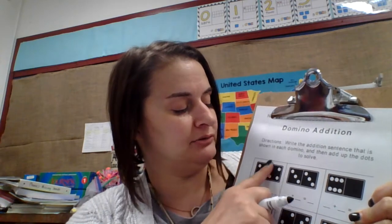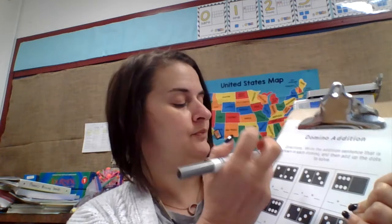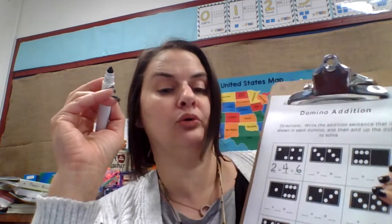So here is some domino addition. I add one side plus the other side to find out how many dots are on the full domino. So it makes me think of one part, the other part, and the whole. So this part is two, this part is four, and that makes six dots on the whole domino.